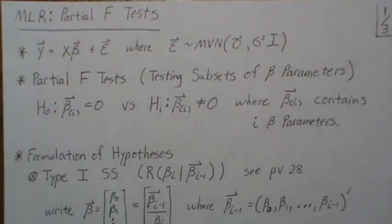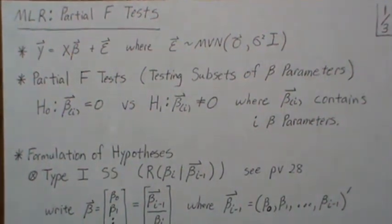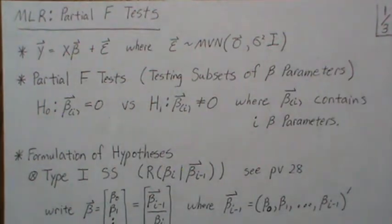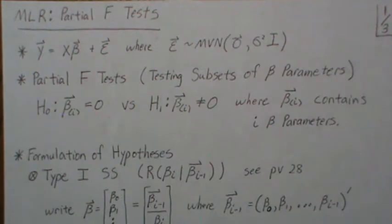Hello. In this video we're in the multiple linear regression setting and we're going to look at partial F-tests. A partial F-test is testing a subset of the beta parameters — are they equal to zero or not. And a subset means one or more.